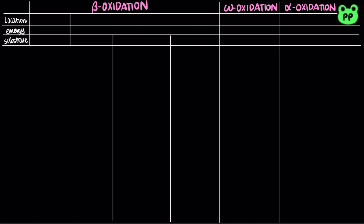In this video, I will focus on several different types of fatty acid oxidation. Mammals derive the greatest amount of energy from beta-oxidation of medium-chain fatty acids (MCFA) as well as long-chain fatty acids (LCFA), which takes place in the mitochondria.